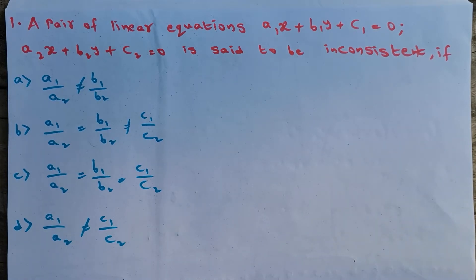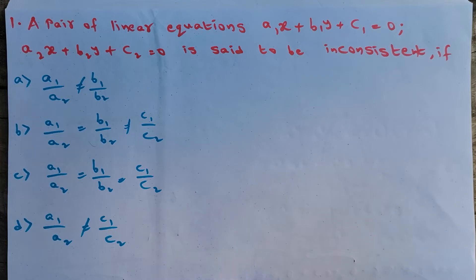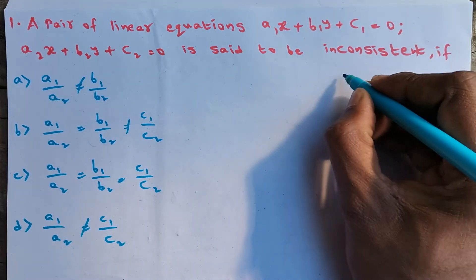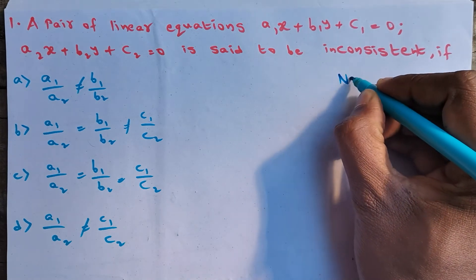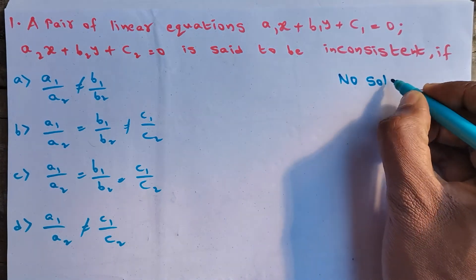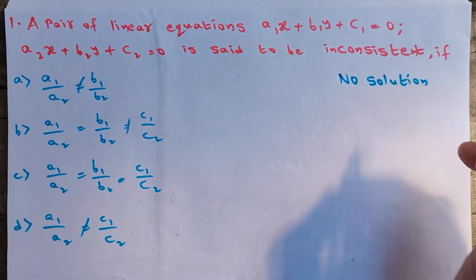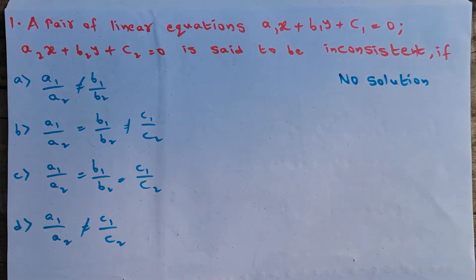A pair of linear equations a1x + b1y + c1 = 0 and a2x + b2y + c2 = 0 is said to be inconsistent. Inconsistent means the two given equations don't have any solution. If two given equations have no solution, then those two are called inconsistent.